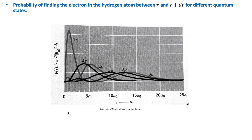A figure shows the plot of the probability of finding the electron at a distance between r and r plus dr for various quantum states. As expected, for the 1s state the probability is maximum at a₀, as predicted by Bohr — the 1s state is the ground state. For an electron in the 2p state, calculations show the most probable distance from the nucleus is 4a₀, which is the radius predicted by Bohr for principal quantum number n equal to 2.